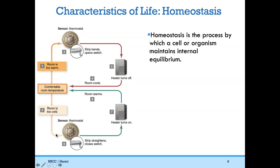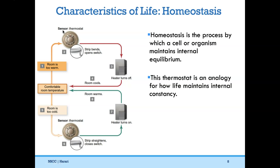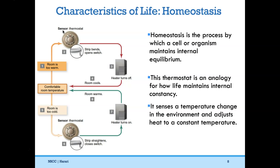If the room gets too cold, the thermostat will sense it has deviated from the comfortable temperature and tell the heater to turn back on again, warming the room back to that comfortable temperature. Our brain and nervous system is like the thermostat — that's the sensor. The thermostat is just an analogy for how all living things maintain internal constancy; in response to a temperature change in the environment, it adjusts to a constant temperature, just like our brain would do.